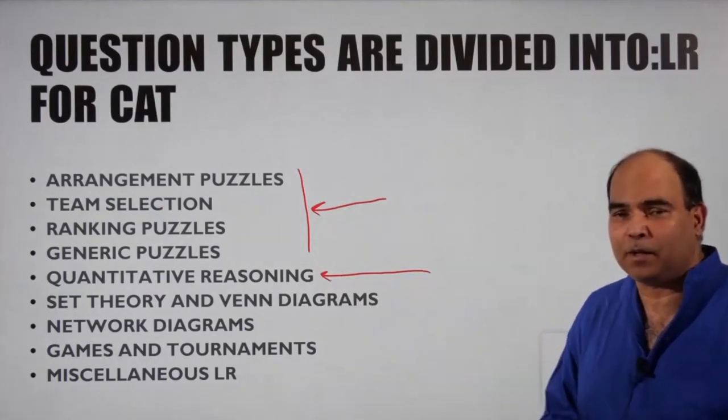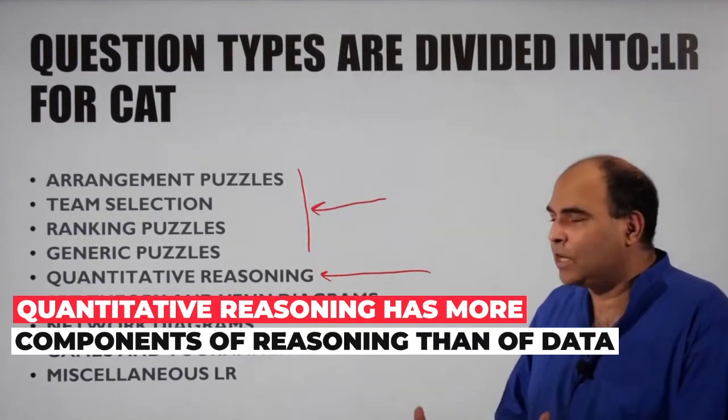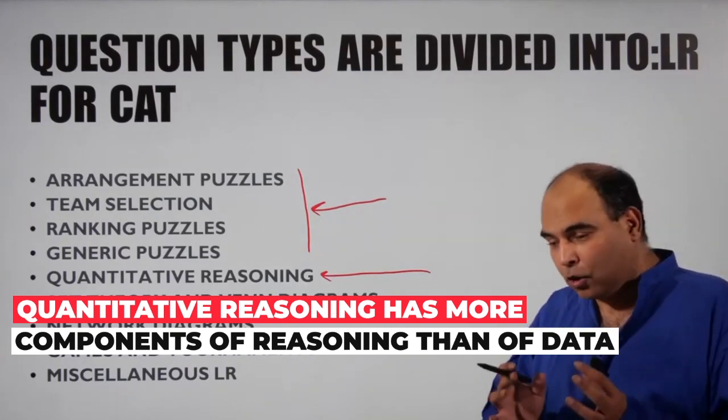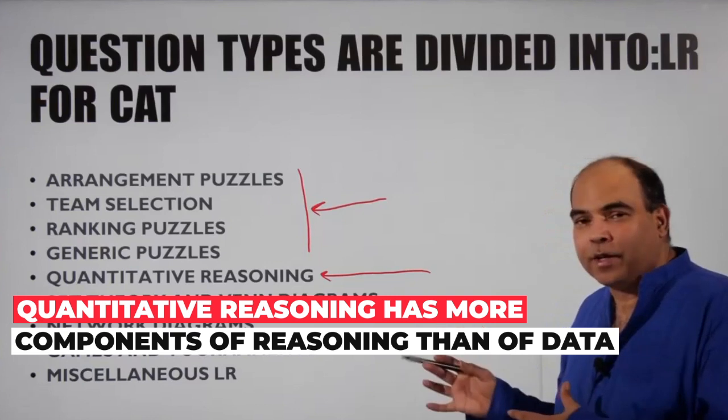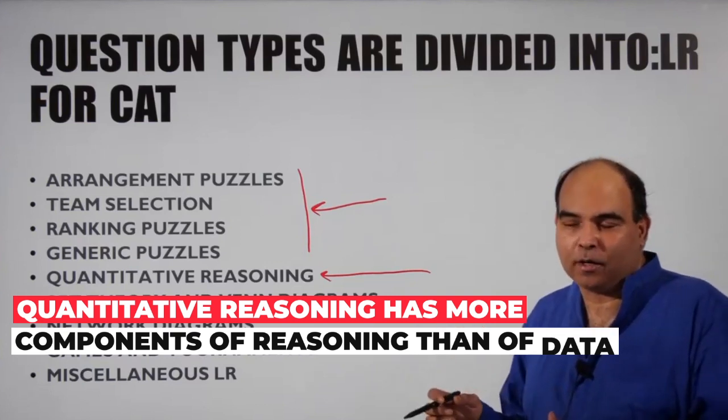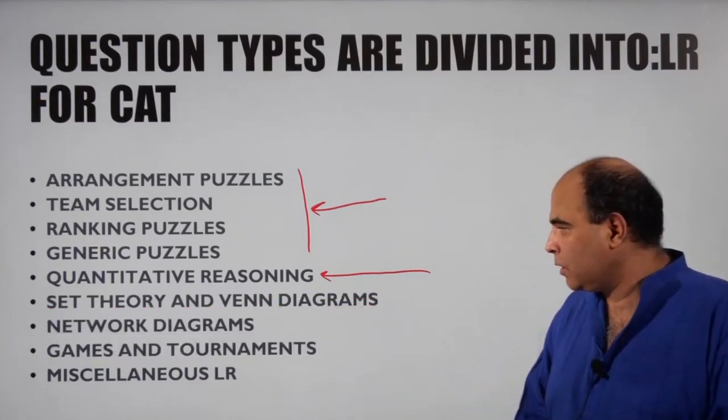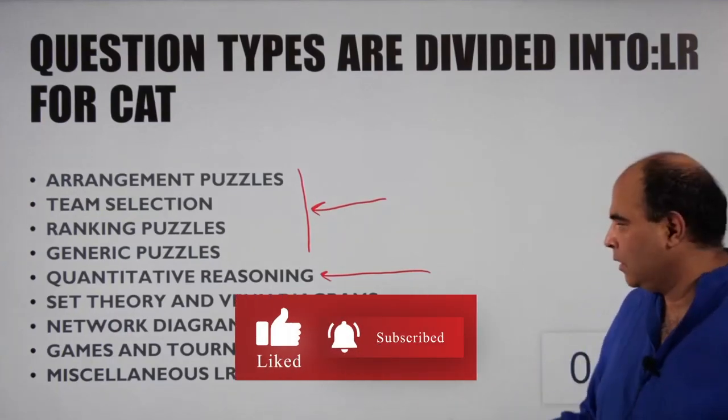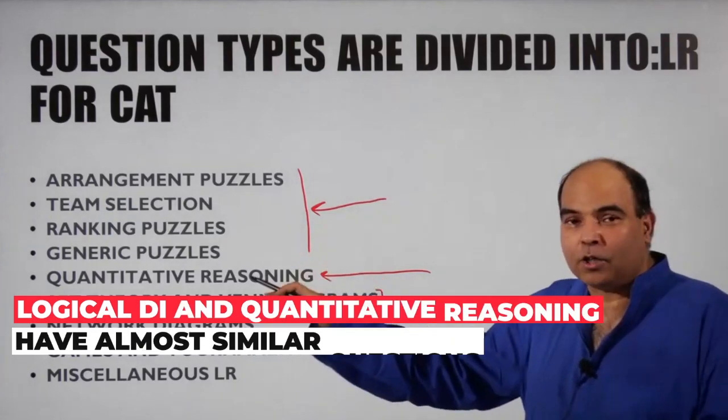This is very close to logical DI, but there'll be more of a reasoning component than a data component. Logical DI questions are dominated by data and logic around the data, while in quantitative reasoning you'll find more reasoning with numericals involved. But it's a very thin line—you can always move questions between categories.